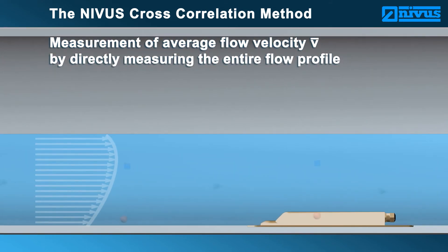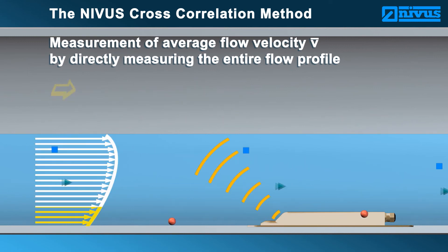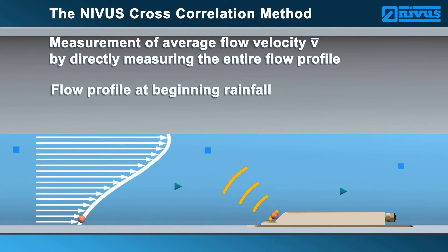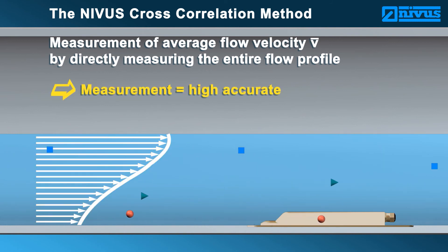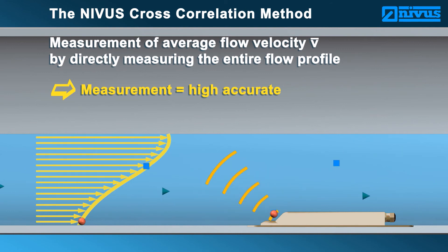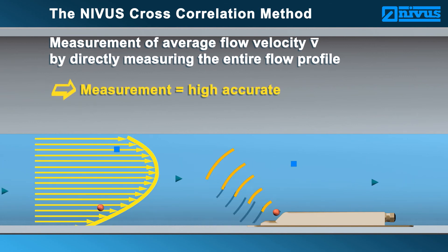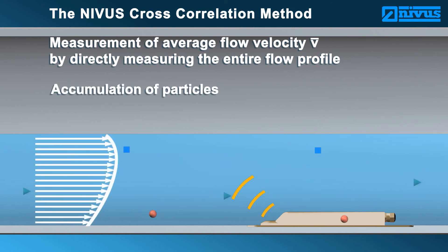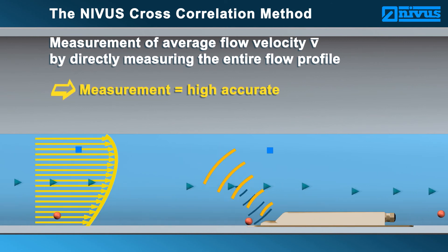The discrete flow velocities related to the flow level, covering the complete measuring beam, ensures high, accurate flow metering. The sensor even detects flow profile changes due to events such as rainfall, and the measurement remains highly accurate. The measurement results remain highly accurate even in case of backwater formation caused by obstacles such as sedimentation, elbows, or throttle equipment. Even accumulation of particles within the medium has no effect on the measurement.